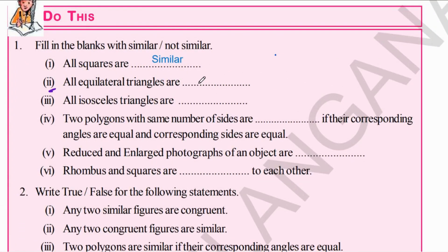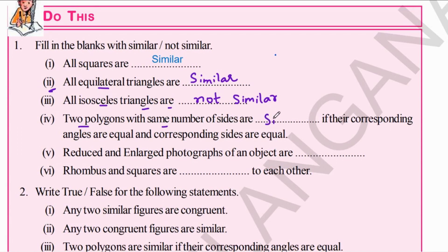All equilateral triangles are similar because their corresponding angles and corresponding sides are also equal. All isosceles triangles are not similar. Two polygons with the same number of sides are similar if their corresponding angles are equal and corresponding sides are also proportional. This is the definition of similar triangles.